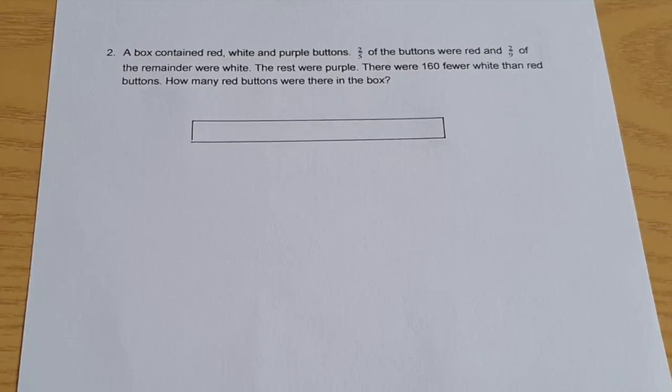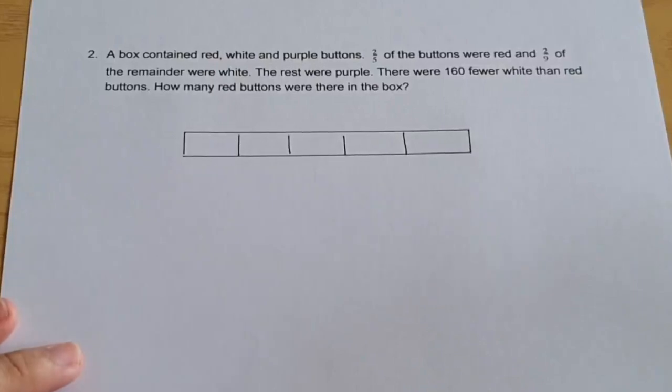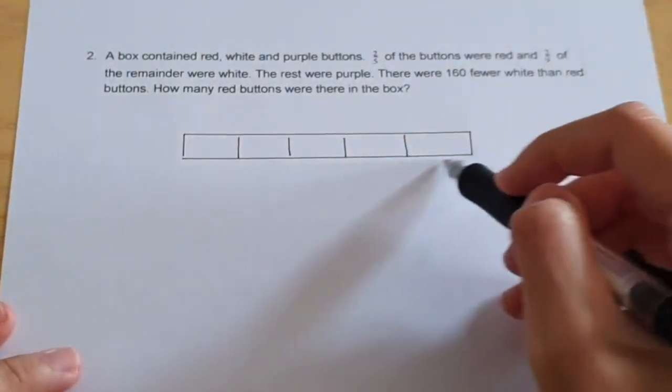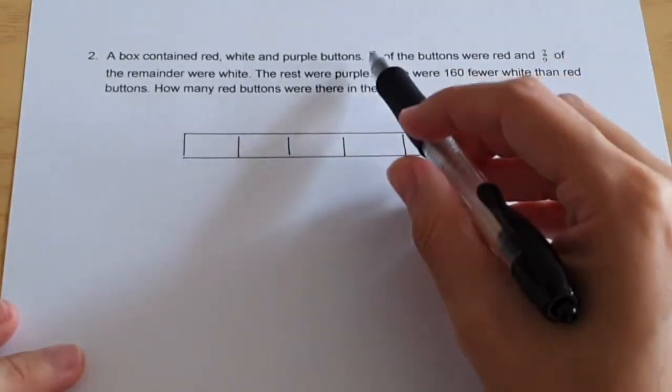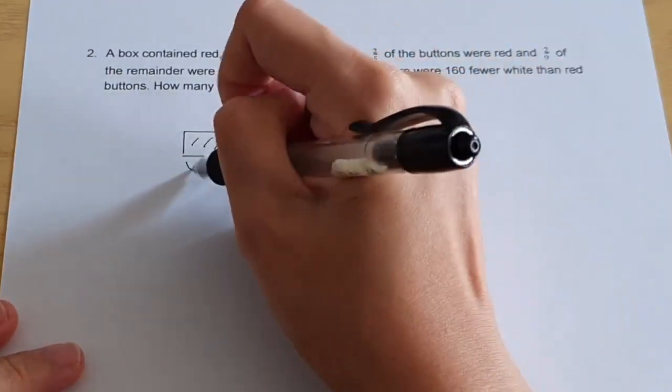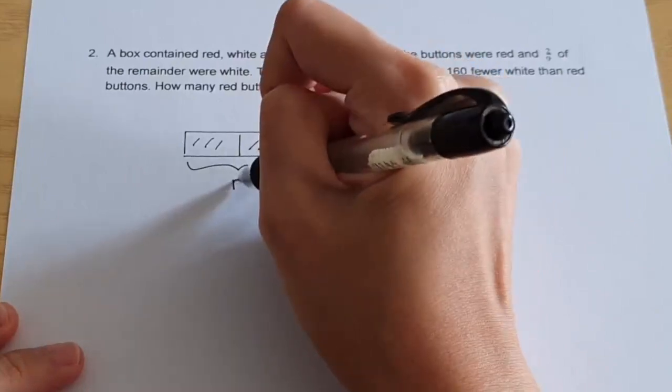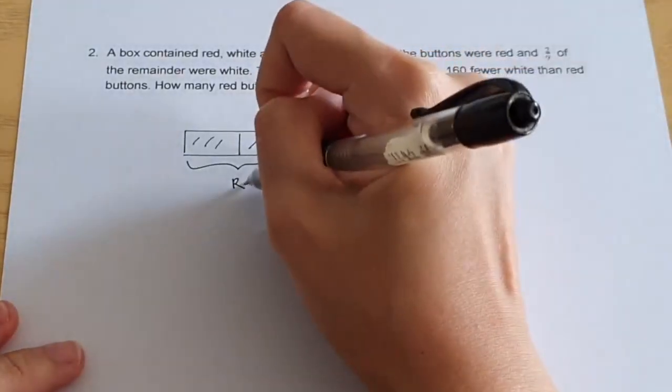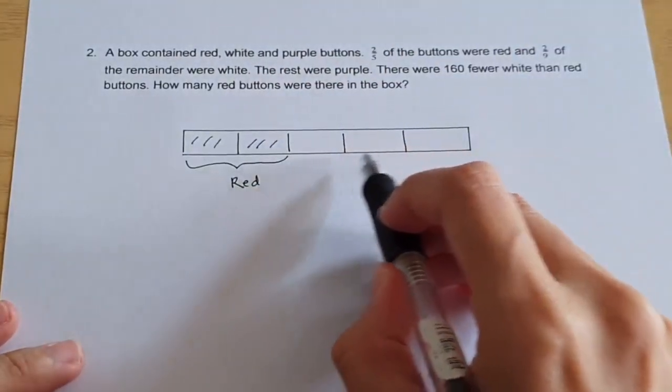A box contained red, white and purple buttons. Two fifth of the buttons were red and two ninth of the remainder were white. This means if I cut the bar into five units, two units will be red. And this is the remainder.